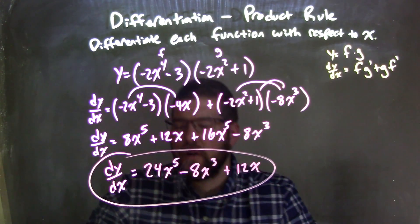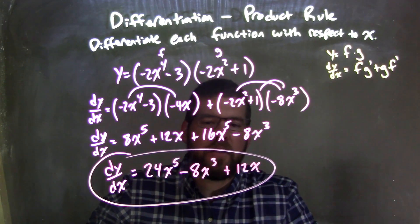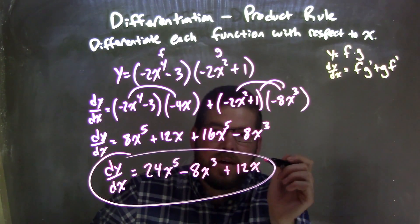We have all parts there, we have our derivative, which is 24x to the 5th minus 8x to the 3rd plus 12x.